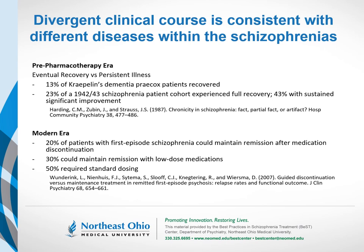If we take a big step backward in time to the pre-pharmacology era, divergent clinical courses amongst patients with schizophrenia were suggesting the possibility that different disease states were underlying the behavioral syndrome. Kraepelin himself, using his criteria for dementia praecox, found that about 13% of the patients he diagnosed eventually underwent spontaneous recovery. A larger study was initiated by Manfred Bleuler, son of Eugene Bleuler, who followed a cohort diagnosed in 1942 or 1943. Bleuler found that a substantial number of patients mounted full recoveries, another portion got significantly better but didn't recover fully, and a third portion had a persistent illness that kept them hospital-bound.